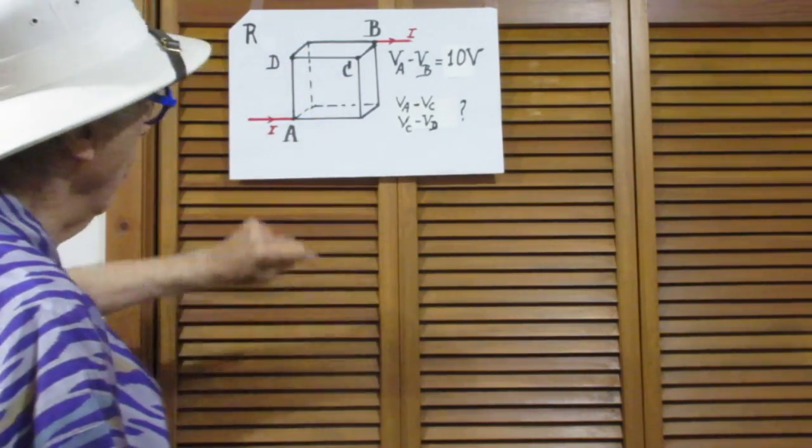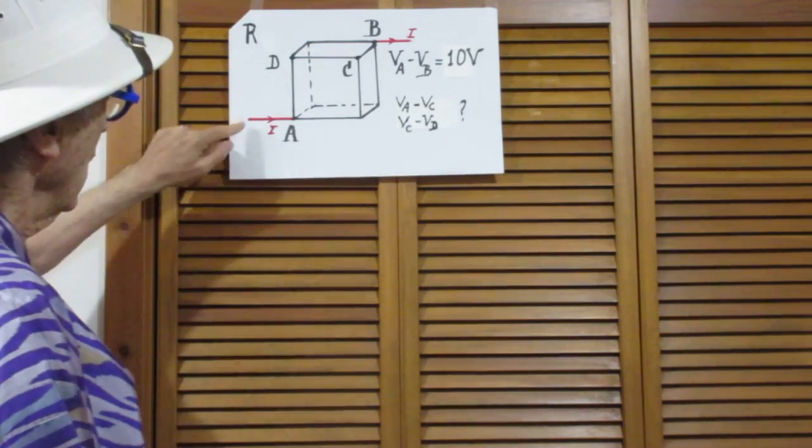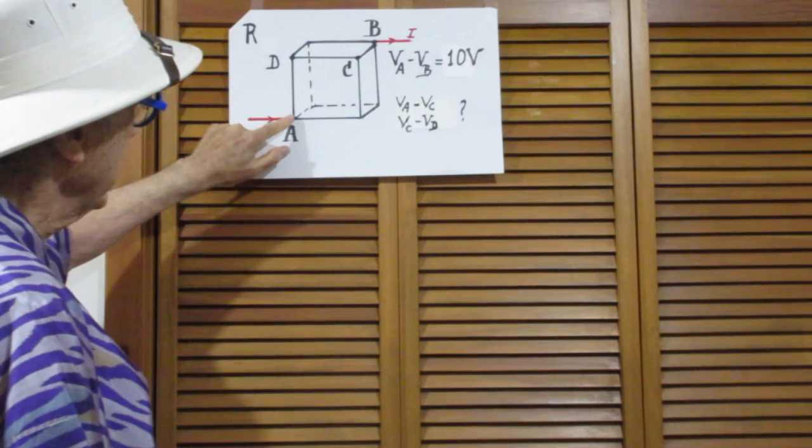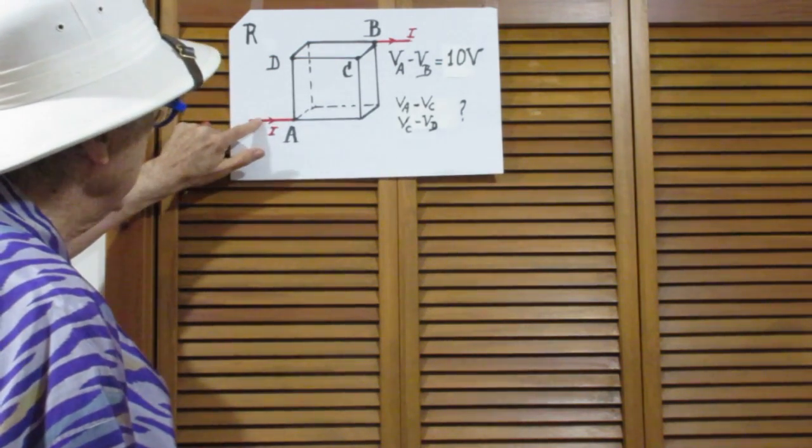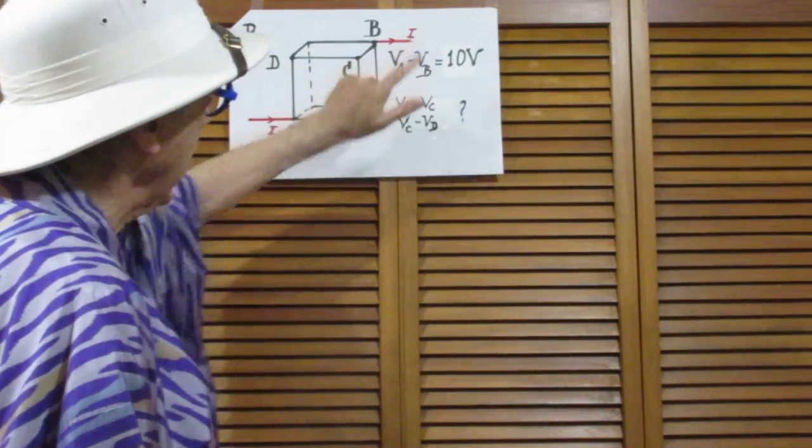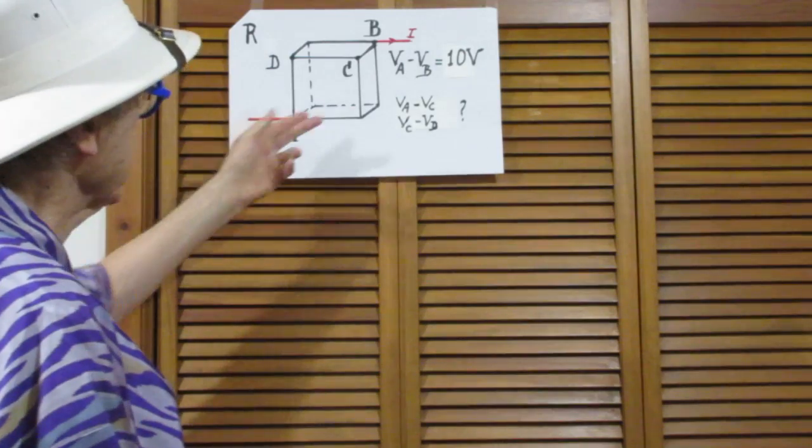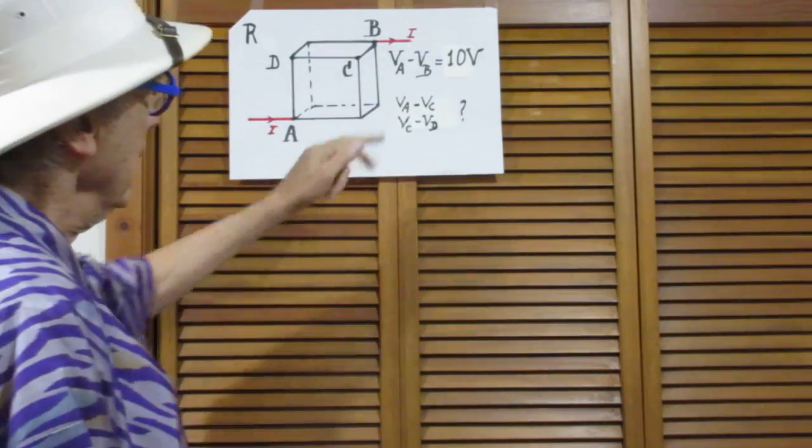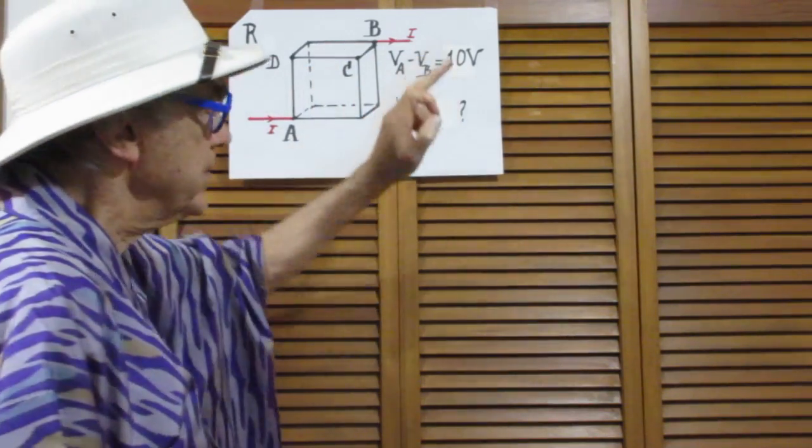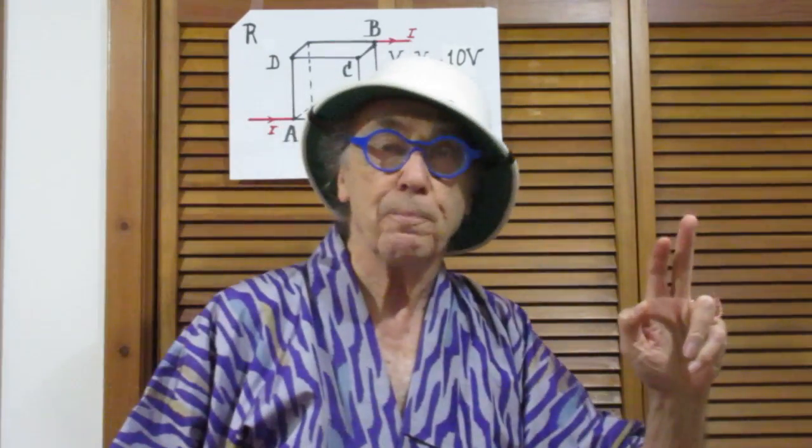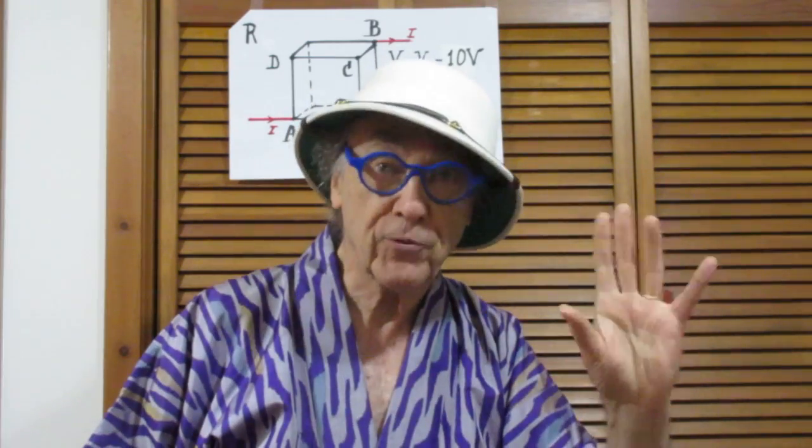I attach a battery between this point A here and that point B there. And as the current is flowing, I give that a symbol capital I. The potential difference between A and B is plus 10 volts, so that's a given, plus 10 volts.